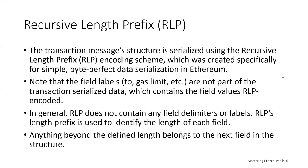The transaction message structure is serialized using Recursive Length Prefix, sometimes referred to as RLP, an encoding scheme created specifically for simple byte serialization in Ethereum. All numbers in Ethereum are encoded as big-endian integers of lengths that are multiples of 8 bits. Field labels like gas limit are shown for clarity but are not part of the serialized transaction data — RLP does not contain field delimiters or labels. RLP's length prefix identifies the length of each field.